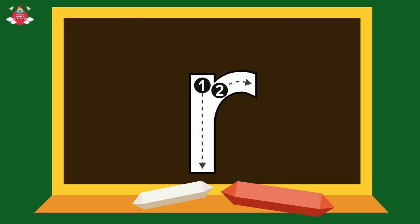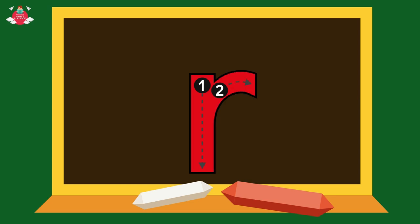Next, small r. Start from the middle and draw a standing line to the bottom. Then go to the middle and draw a small curve towards the right.